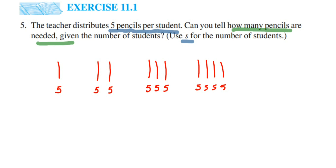If you observe: if there's one student it is 5×1. If there are two students it is 5+5, or instead of adding we can multiply 5×2. If there are three students it is 5+5+5, and again instead of adding we multiply 5×3, because we're adding five three times.